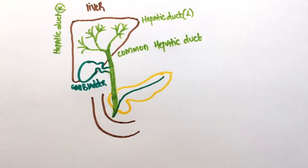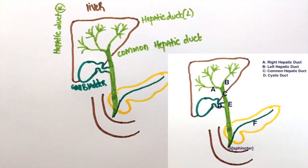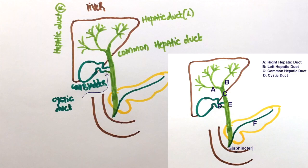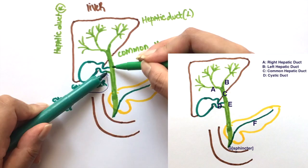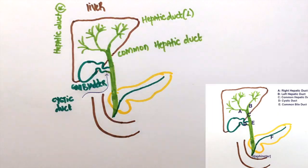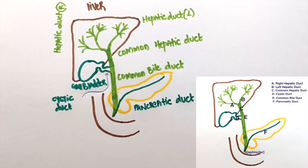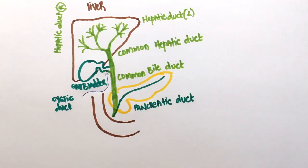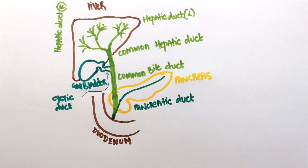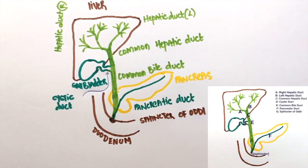The dark green structure here is the gallbladder and this is the cystic duct. The common hepatic duct and the cystic duct come together to form the common bile duct. This is the pancreas, so it isn't hard to figure out that this dark green structure here is the pancreatic duct. The common bile duct and pancreatic duct open into the duodenum. The opening has a sphincter known as sphincter of Oddi.